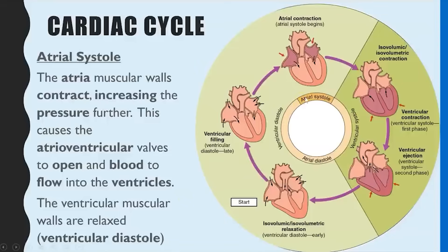Moving on to atrial systole. The ventricles at this point are still in diastole — still relaxed — but now the atria contract, which is shown in this diagram where the darker purple is. As the atria contract, that decreases their volume, which increases the pressure. That increase in pressure behind the atrioventricular valves forces the AV valves open, and blood starts to pour into the ventricles.